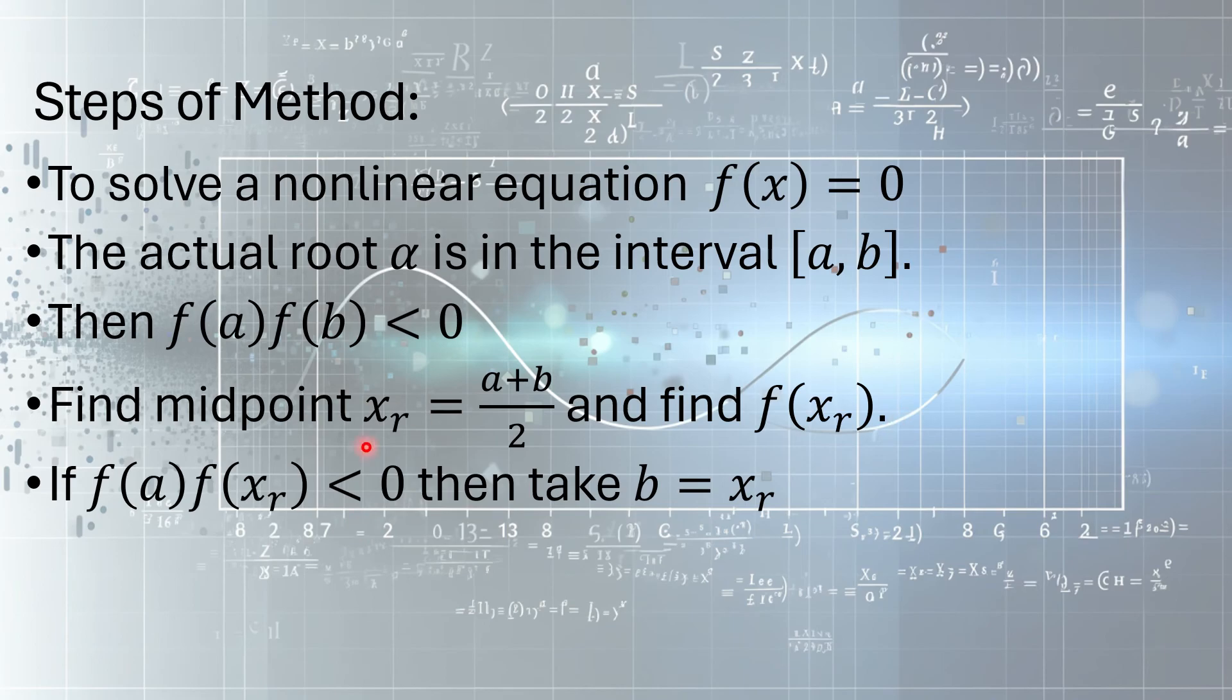But if it is not 0, then there is a possibility that f(a) and f(xr), they have opposite sign. If that is the case, if they have opposite sign, you would replace b with xr. And then you would repeat the process.